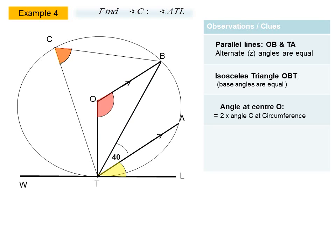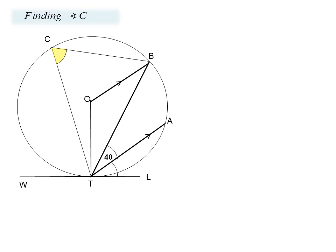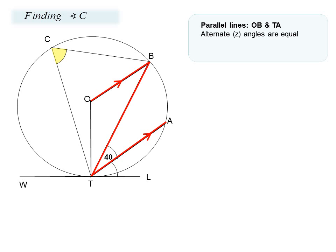In our third clue, we note that the angle subtended at the center is twice the angle subtended at the circumference at C, so we can apply this theory relating to angles at the center. Finally, we have one tangent, and we can apply the theory relating to the angle between the tangent and the chord and the alternate segment. Let's go ahead and apply these theorems to find angle C.